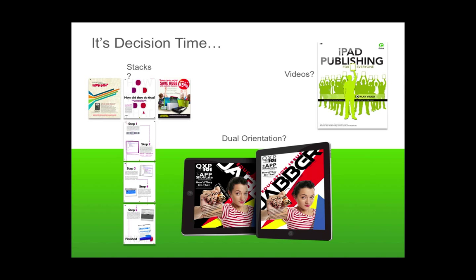If you do want to only use one orientation, you'll want to set that up at the beginning to avoid doing all that extra work that goes along with laying out content in both orientations. It's in the new project menu — when you select iPad, you have the option of choosing both horizontal and vertical, or just one of either.